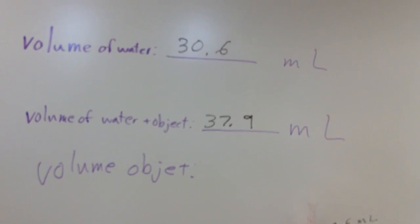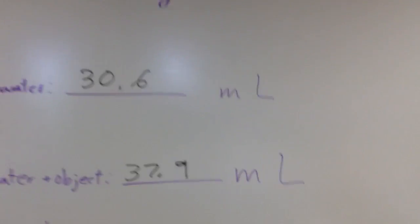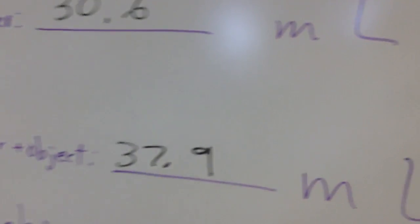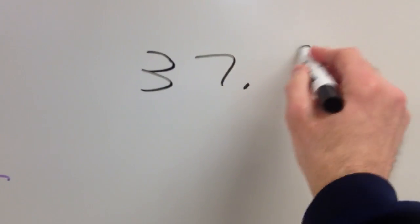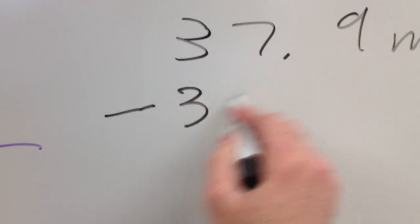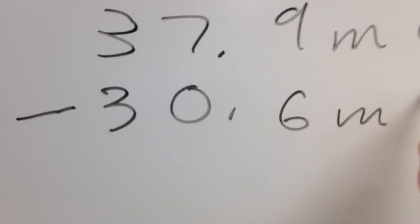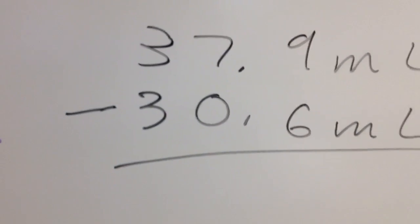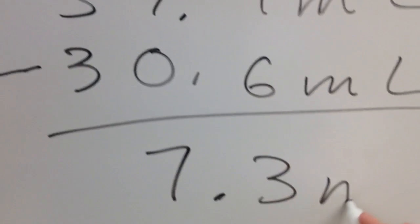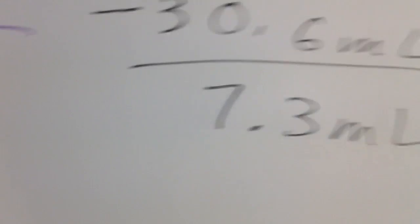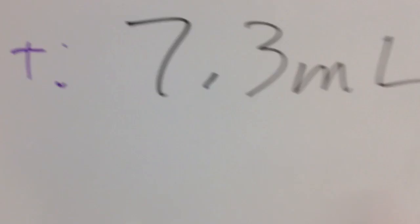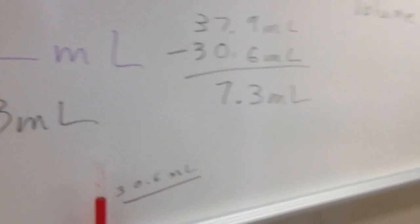So what's the volume of my object? The volume of my object is going to be the difference between my two volume readings here. So I'm going to take 37.9 milliliters, I'm going to subtract 30.6 milliliters. That 7.3 milliliters is the volume of my object. And that's two sig figs, right? After we subtract.